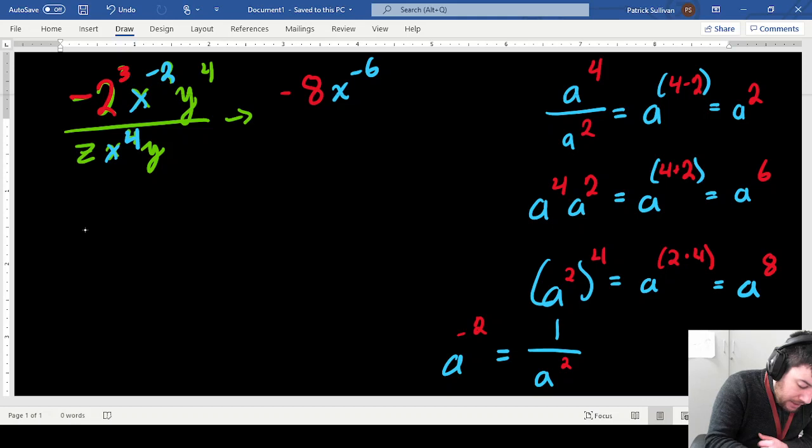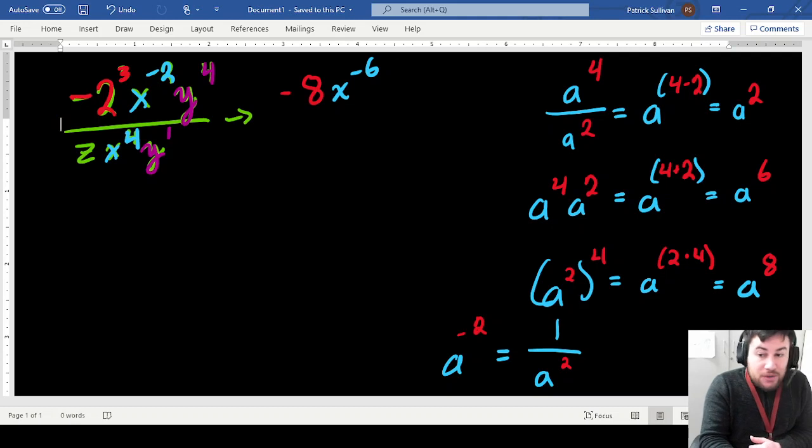Now let's take a look at my y values. Now in the denominator, I just have a y, but remember, when there's no exponent already written, you have to put in that ninja 1, okay? You've got to put in that ninja 1. So I have y to the fourth over y to the first.